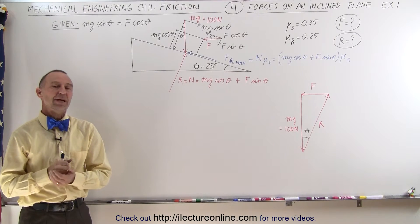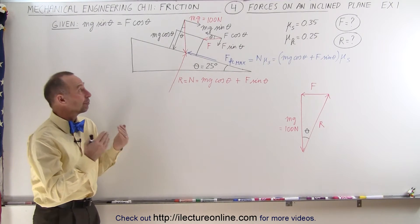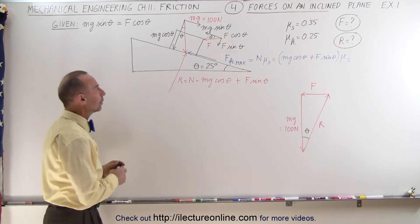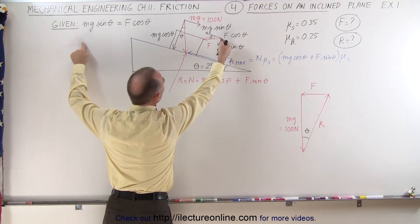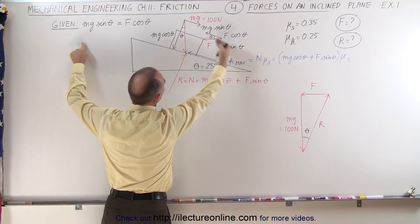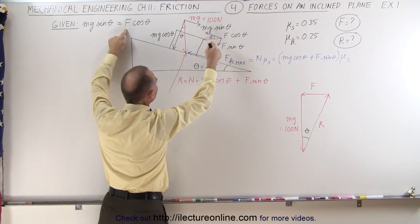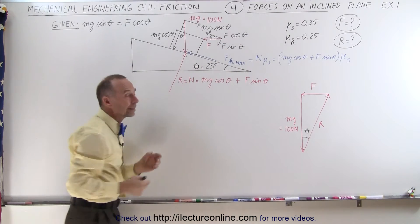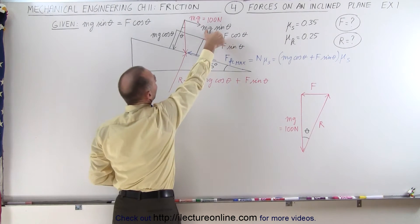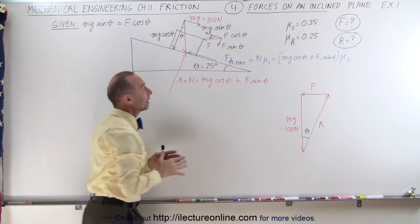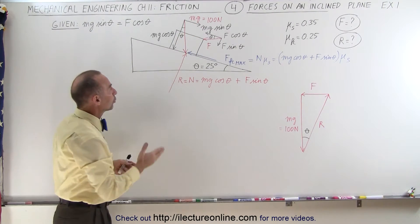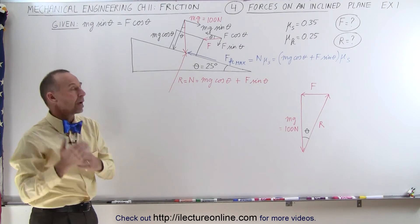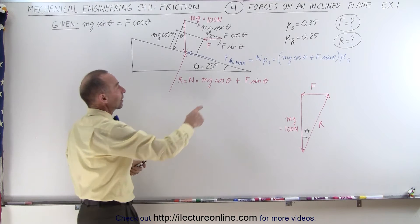Welcome to ElectronLine. Here we have our first example where we have a force acting on an object sitting on an inclined plane. The given here is that the component of the force pushing the object up the incline is exactly equal to the component of the weight trying to push the block down the incline, which means these two components are equal to one another. There is a maximum friction force capable.